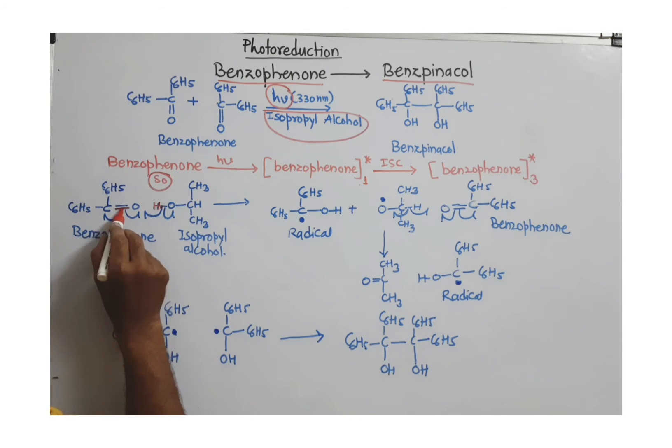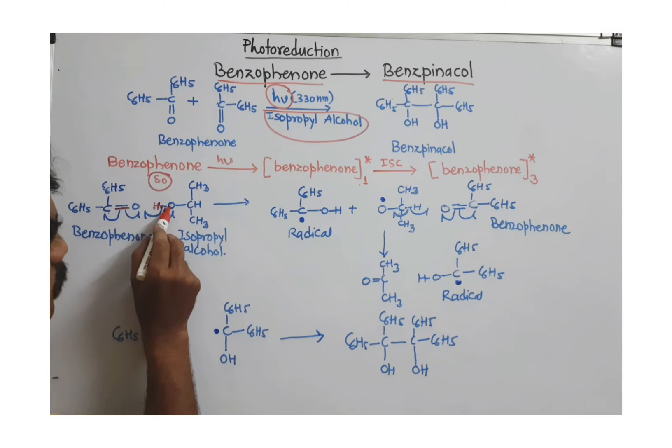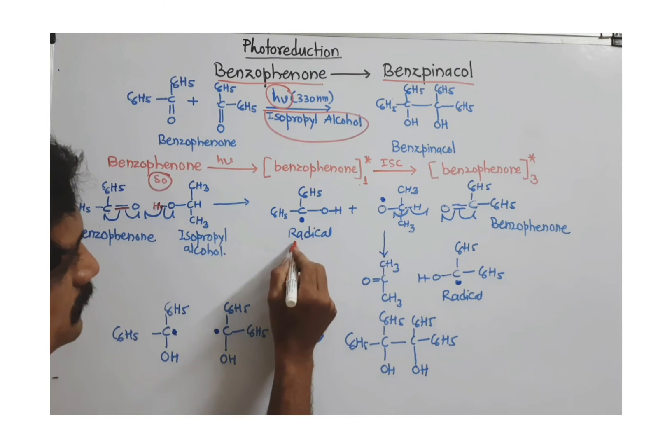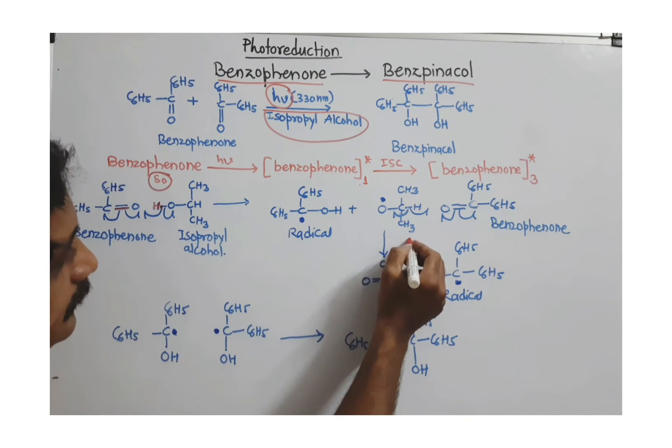That means one electron from this pi bond over oxygen and one electron of this sigma bond, this proton is coming here to form sigma bond with this oxygen. Obviously, this electron will go to this carbonyl carbon and one electron will go to the oxygen of this alcohol. So we get here two radicals. So this is one radical, this is another radical.